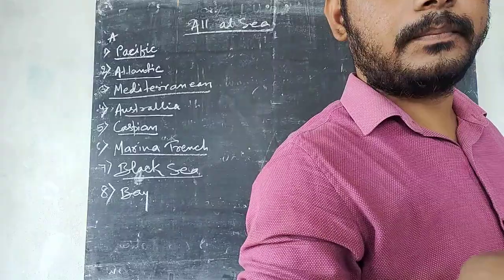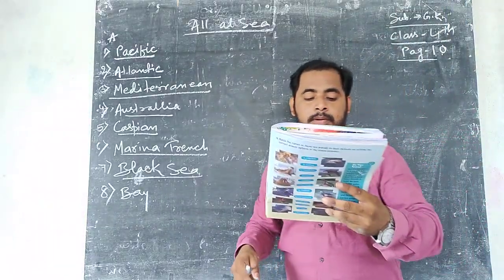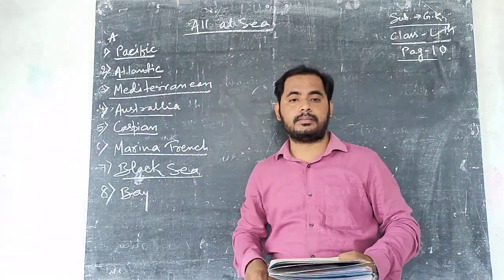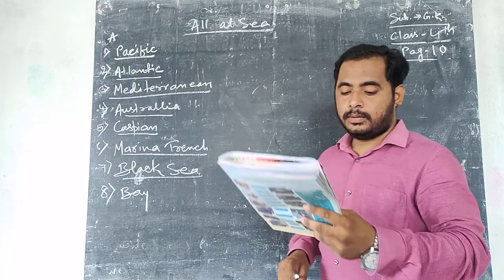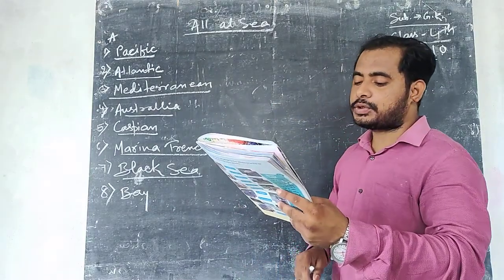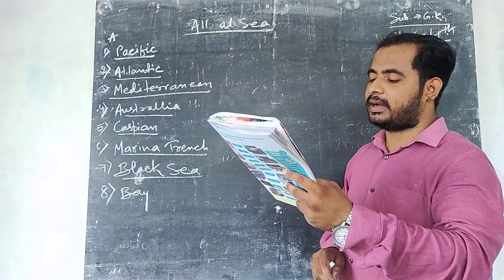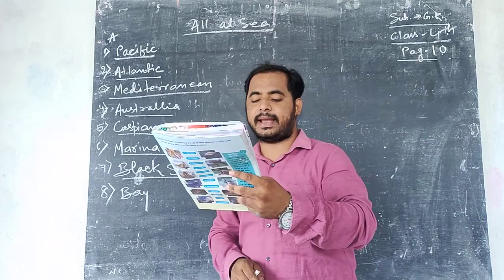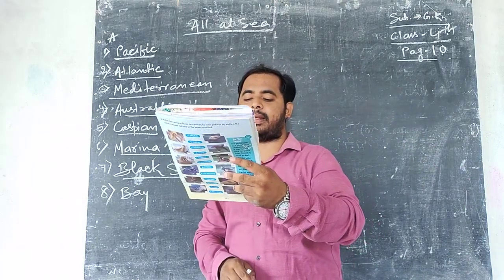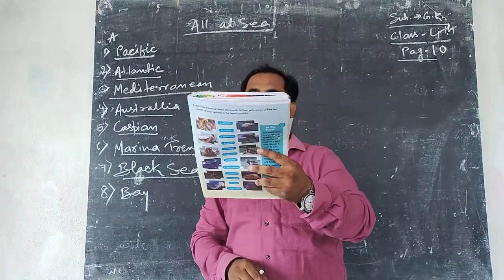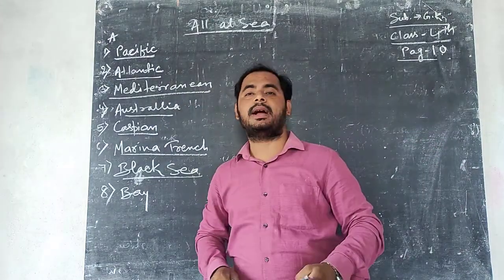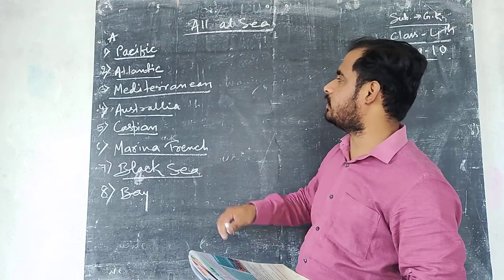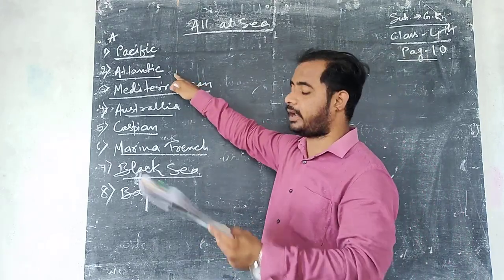Question number 2: This ocean lies between the continents of Europe and America on one side and South America and North America on the other. The answer to question number 2 is Atlantic.